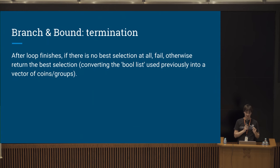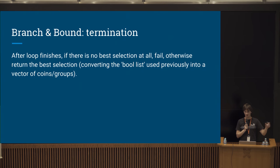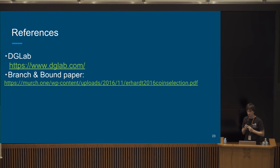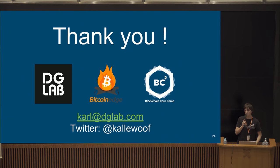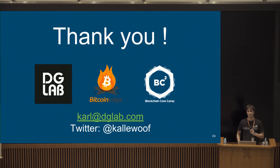At the end of Branch and Bound, if no valid selection was found we fail; otherwise we return the result. Since the selection is stored as a list of booleans, we pull out the corresponding UTXOs, add them to a vector, and return it — a minor implementation detail. There are references available if you want to read the paper. Thank you.